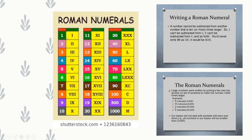Roman numeral writing: 1 = I, 2 = II, 3 = III. Since a Roman numeral cannot be repeated more than 3 times, 4 = IV (V − I = 5 − 1 = 4). Rule: a smaller numeral to the left of a larger numeral means subtraction; to the right means addition. 5 = V, 6 = VI (5+1), 7 = VII, 8 = VIII, 9 = IX (X − I = 10 − 1), 10 = X, 11 = XI (10+1), and so on.